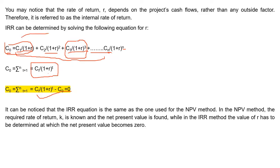You will see that the IRR formula is just like the NPV formula explained in the last lecture. The IRR formula calculates present value because IRR is also a discounted method of capital budgeting, just as NPV is. The discounted method of capital budgeting considers the time value of money, whereas the non-discounting capital budgeting technique does not consider the time value of money.